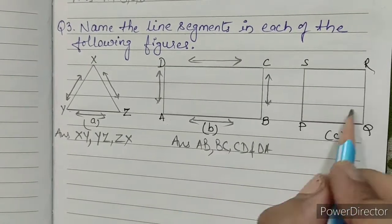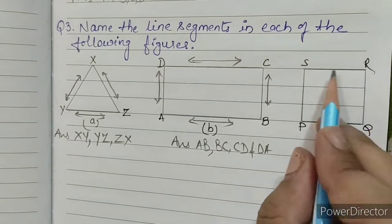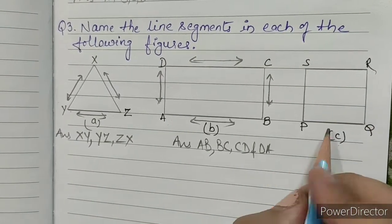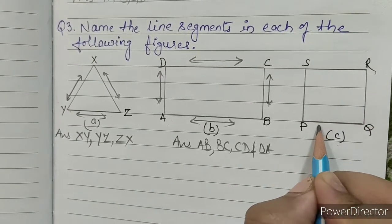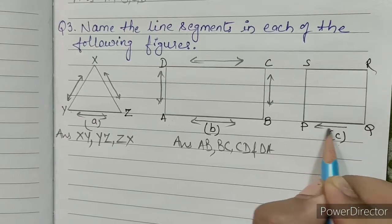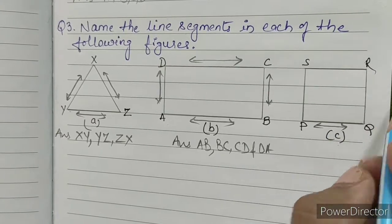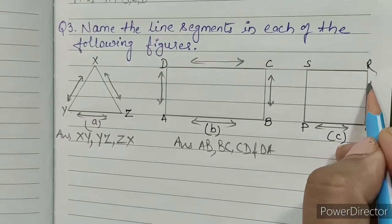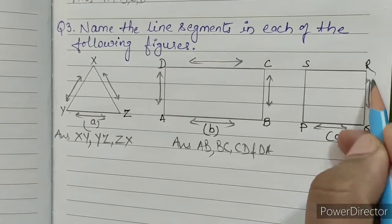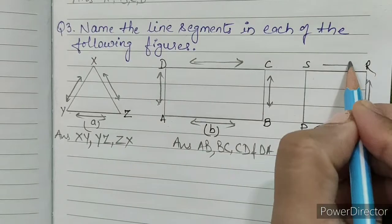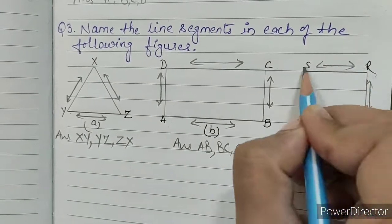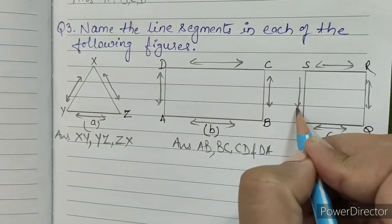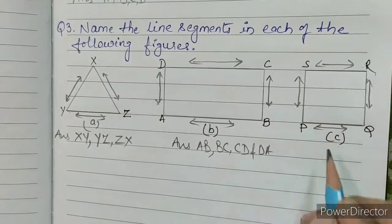C, this is a square. In this, the line segments are PQ, QR, RS and SP.